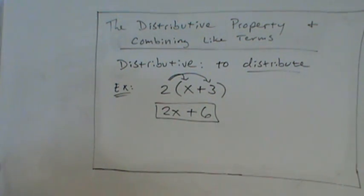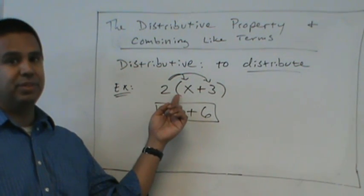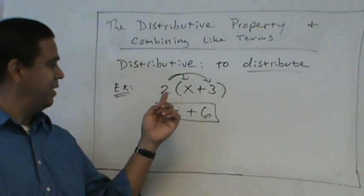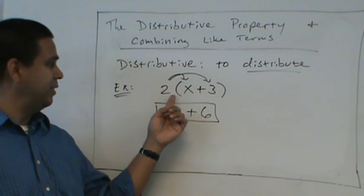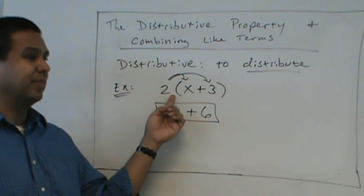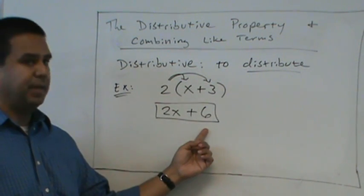So there's an example with the distributive property. So if I have a 2 right up against the parentheses, we talked about this in learning the integers and order of operations. That 2 right next to parentheses, there's no operation in between. That means multiply. So we're going to do 2 times x and 2 times 3.